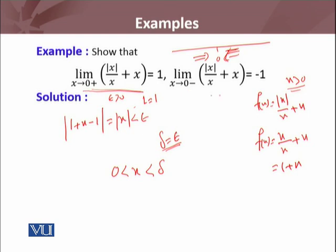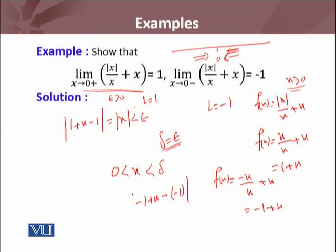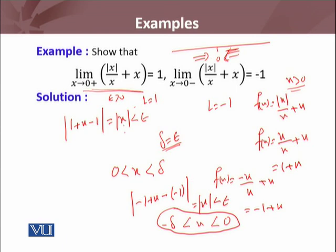Now if we move toward zero from the left side, the function definition changes. For x < 0, |x| = −x, so f(x) = −x/x + x = −1 + x. Now L from the left side equals −1. So we consider |f(x) − L| = |−1 + x − (−1)| = |x|. I need this to be less than ε. But now my interval is from −δ to 0, since we are approaching from the left side.